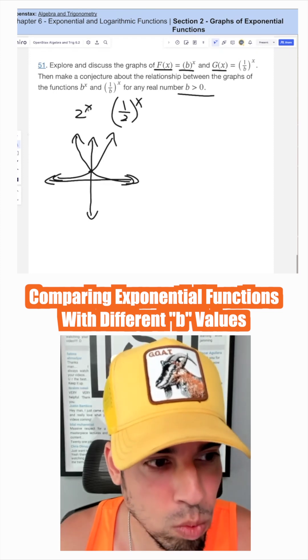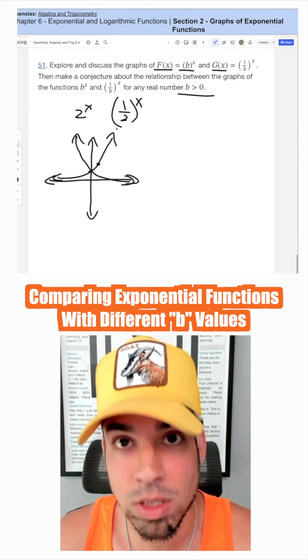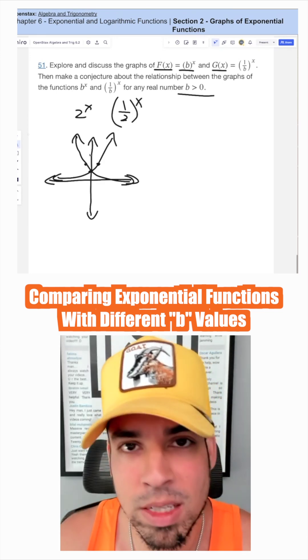When x is 1, we should get 2 out here. When x is negative 1 here, 1 half to the negative 1 is the reciprocal of 1 half, which is also 2. Hence, that explains that symmetry.